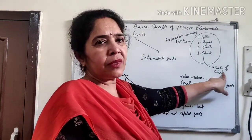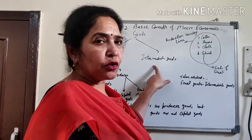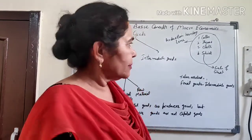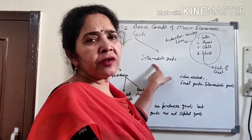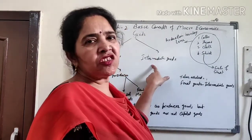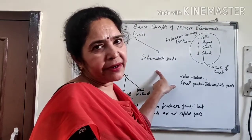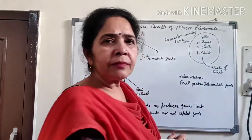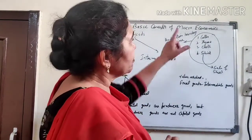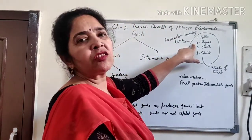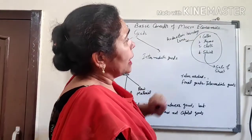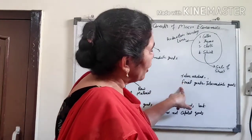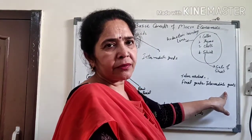Intermediate goods are those goods which again and again go into the further production process — they are reused for the next production process, and value is still to be added to them. For example, cotton inside the production boundary line is an intermediate good because the producer will make thread from it. Value addition is equal to the price of final goods minus the price of intermediate goods.